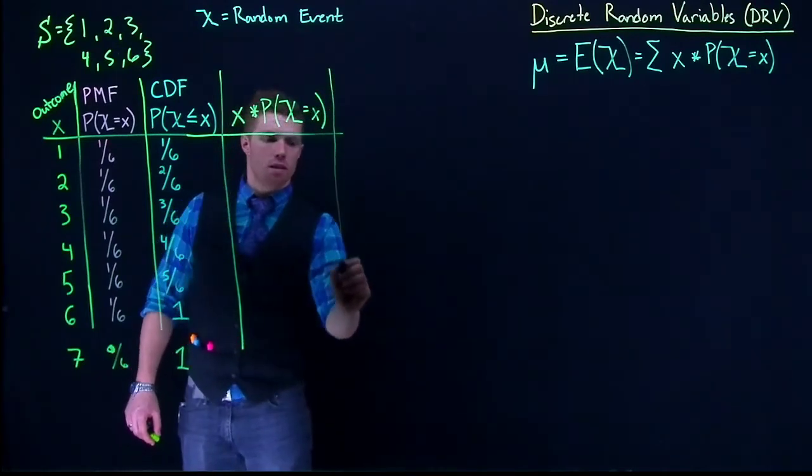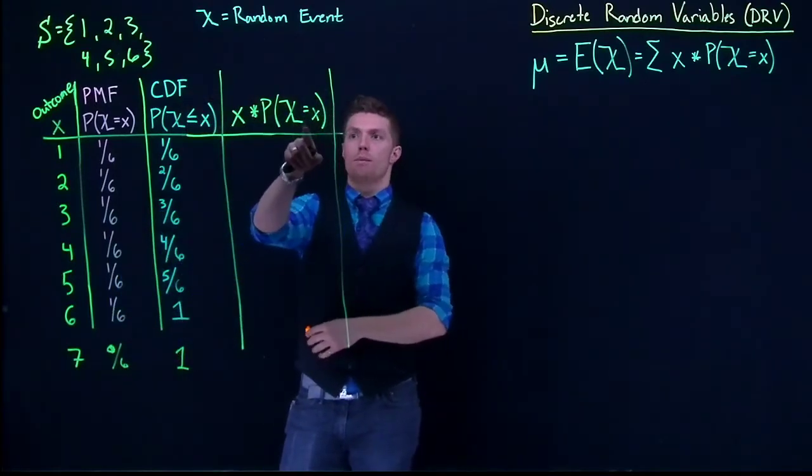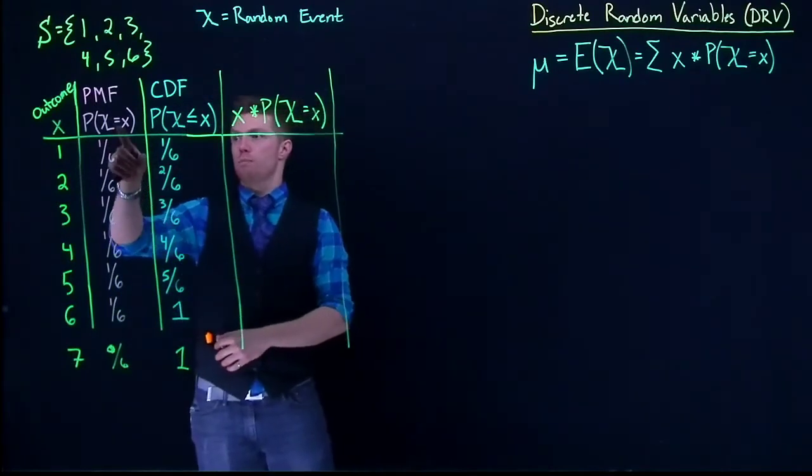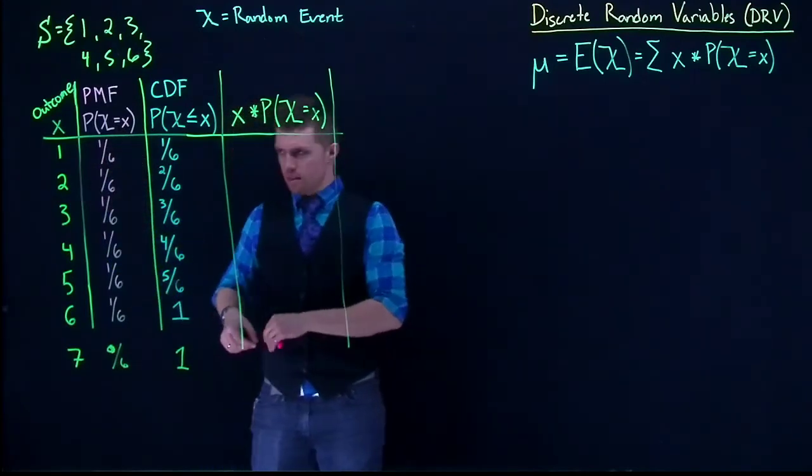All right, notice how we have each of those values. We know what the probability of success is, it's the PMF. So we're just going to basically be taking the PMF value multiplied by the outcome.